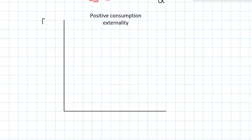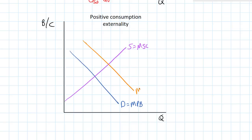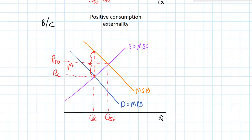In contrast, we have a positive consumption externality — a good that benefits society more than it benefits the private consumer. A good example is education: the more education an individual gets, the better off society as a whole is. The marginal social benefit is greater than the marginal private benefit, and at equilibrium quantity there's a potential welfare gain from more of the good being produced. The blue triangle represents the deadweight loss, or how much better off society would be if more of this good were produced.